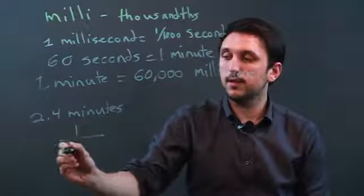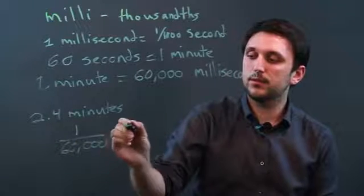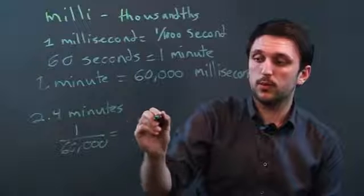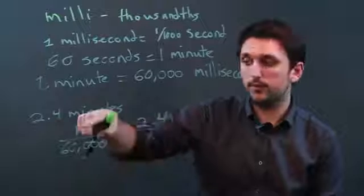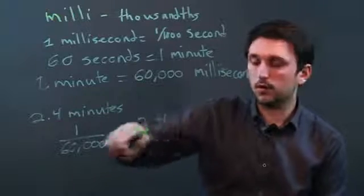One is to 60,000 as, well, 2.4 is to, well, we don't know how many milliseconds, we call it x. And because we have a fraction, an equal sign, and a fraction, we cross multiply.